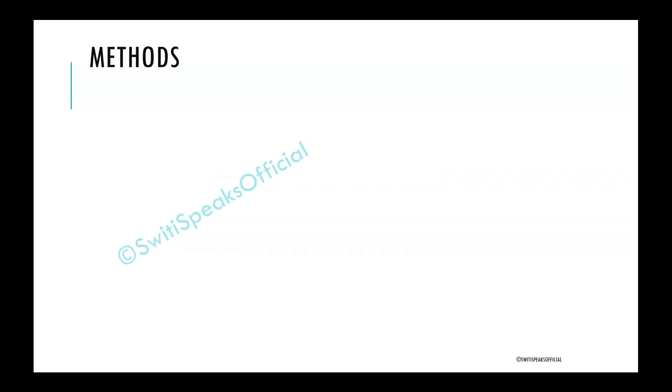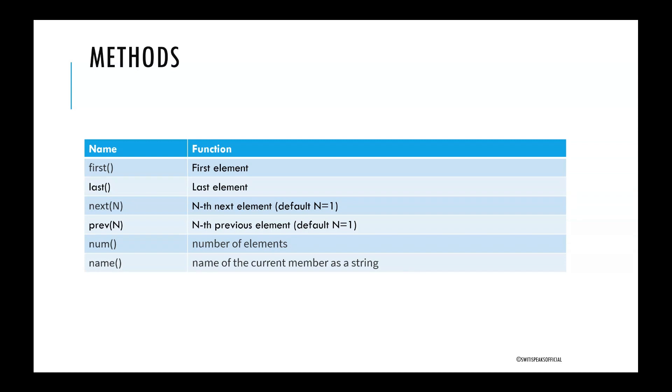Let us see some of the methods used in enum. These are the methods. First method will return the value of first element. Then last method will return value of last element. Next...